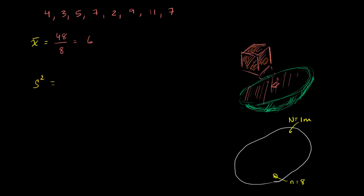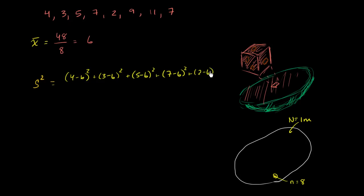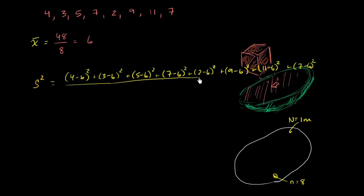So the unbiased sample variance is going to be: four minus six squared, plus three minus six squared, plus five minus six squared, plus seven minus six squared, plus two minus six squared, plus nine minus six squared, plus eleven minus six squared, plus seven minus six squared. All of that divided by eight minus one — so we divide by seven.